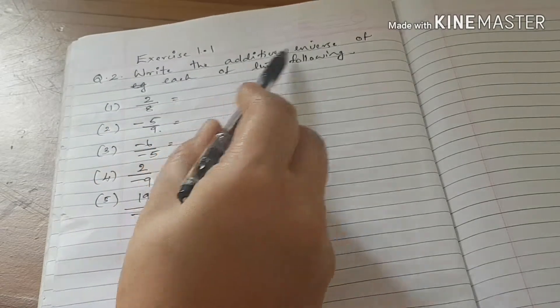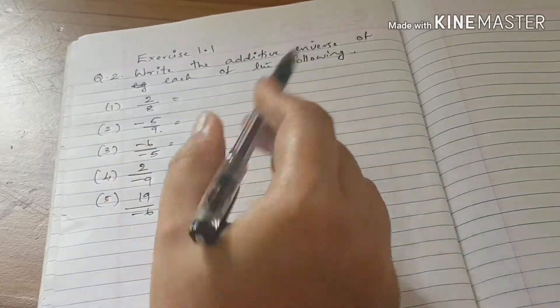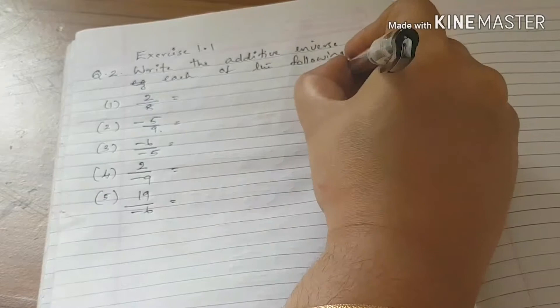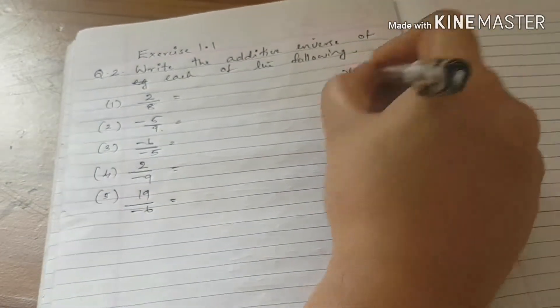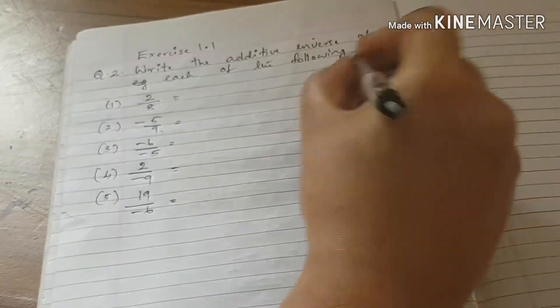Question number 2: Write the additive inverse of each of the following. What number is the additive inverse? That is the negative number. x plus minus x equals 0. We have learned that.